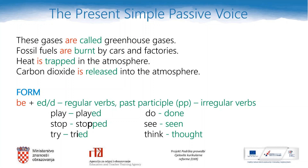Na primjer, 'mama kuha ručak' je aktivna rečenica. 'Ručak je skuhan' — ta ista rečenica je sada u pasivu. Ručak je sada subjekt, a 'skuhan' je glagolski pridjev trpni.